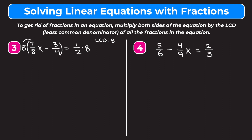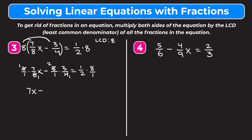On the left we're going to distribute: 8 over 1 times 7/8x, minus 8 over 1 times 3/4. On the right, this equals 1/2 times 8 over 1. Now we cross-reduce. For 8 over 1 times 7 over 8, we divide both 8s by 8, they both turn into 1, so we're left with 7x. For 8 over 1 times 3 over 4, we cross-reduce 8 and 4 by dividing by 4: 8 divided by 4 is 2, 4 divided by 4 is 1, so 2 times 3 is 6. On the right, we cross-reduce 2 and 8 by dividing by 2: 2 divided by 2 is 1, 8 divided by 2 is 4, giving us 4.